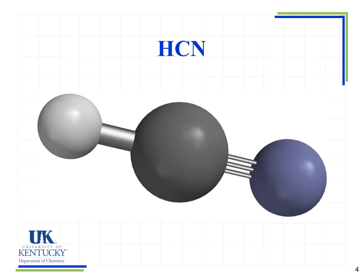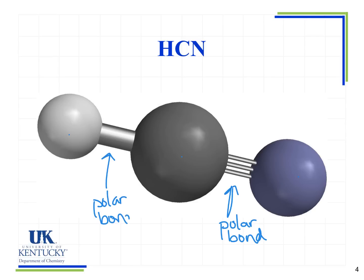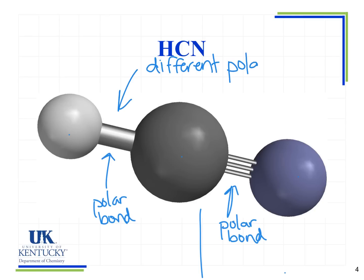Now we have HCN — hydrogen, carbon, and nitrogen. Looking at the bonds, both the H-C bond and the C-N bond are polar. But now I want to compare the polarities of these two bonds, and I see that the polarity of the H-C bond is different than the polarity of the C-N bond. I'm not worried about which one is stronger or weaker — all that matters is that they are different.